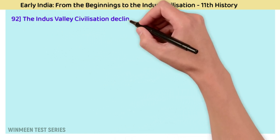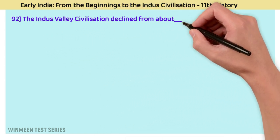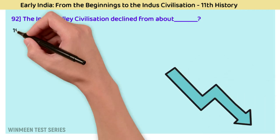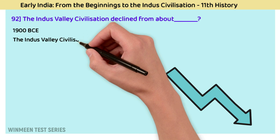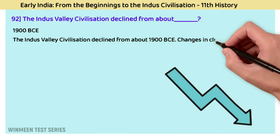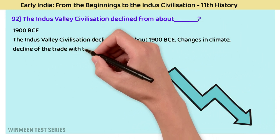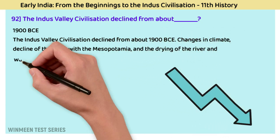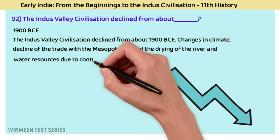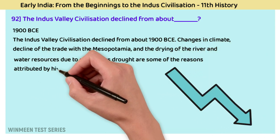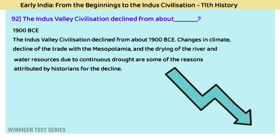Question 92: The Indus Valley civilization declined from about 1900 BCE. Changes in climate, decline of trade with Mesopotamia, and the drying of rivers and water resources due to continuous drought are some of the reasons historians have attributed for the decline.